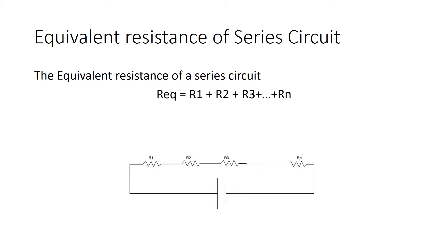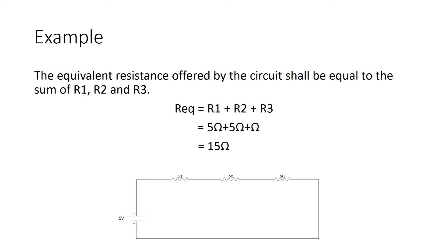Equivalent resistance of series circuit. The equivalent resistance of a series circuit: R-equivalent equals R1 plus R2 plus R3 up to Rn. Consider a circuit containing three resistances, each of 5 ohms, connected in series. In this circuit the equivalent resistance will be equal to 15.